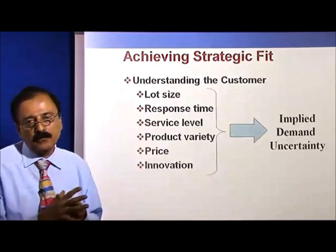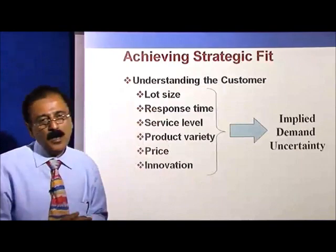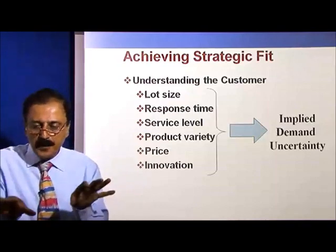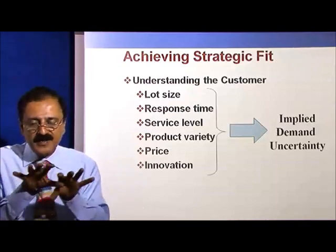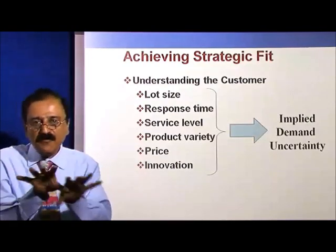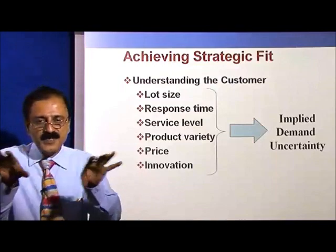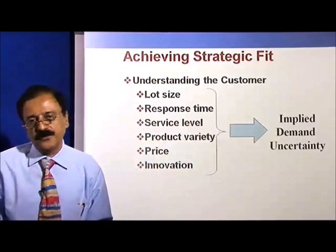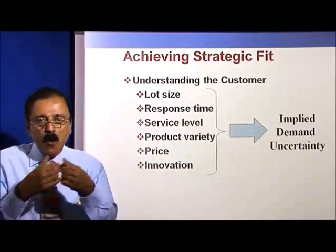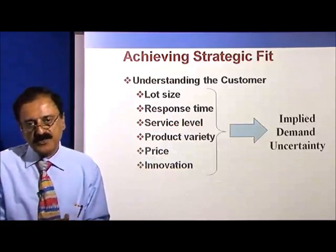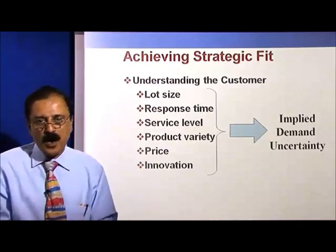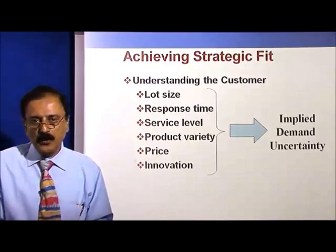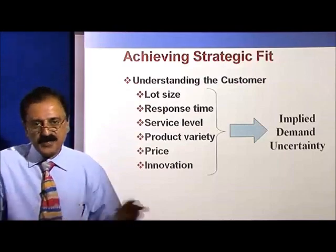For achieving the strategic fit, what are the parameters we need to look at? The first is the lot size. In stable and mature markets, we have a standard lot size where there is no variation in demand and fewer variants. But in the responsive market, you will have larger variance and more products to offer — a classic example being Hindustan Lever, which has personal care products, hygiene products, and food products. So lot sizes come in the form of SKUs — stock keeping units — or completely knock-down condition in terms of motorcycles or scooters.